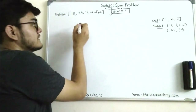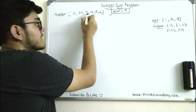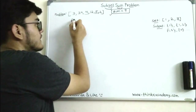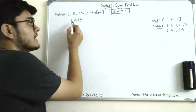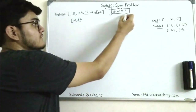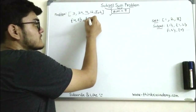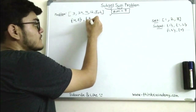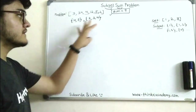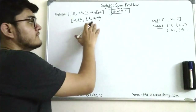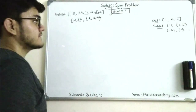Looking at this problem, the answer — the subsets that satisfy the sum — can be found as follows. If we pick up four and five and make a subset, we can see that the sum of these two numbers gives us nine. There is one more subset which is {2, 3, 4}. These are the two subsets and if you add all the elements of these subsets you get the sum.